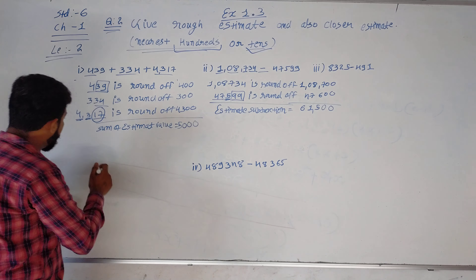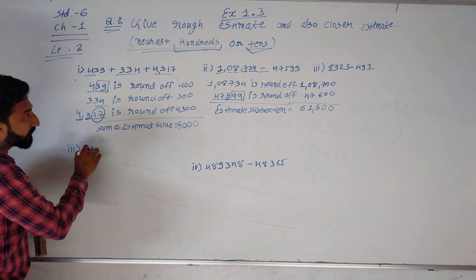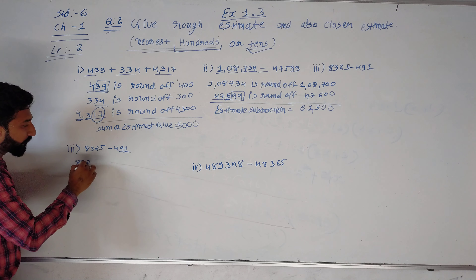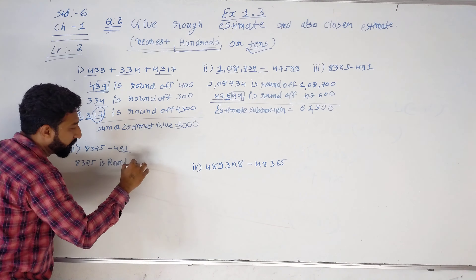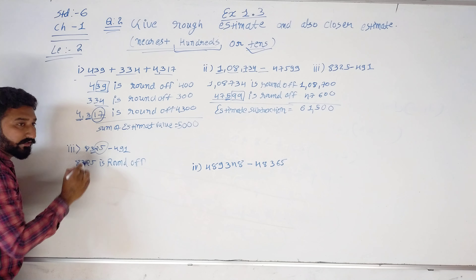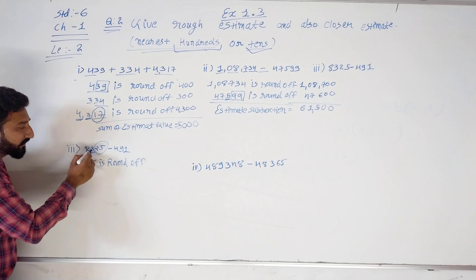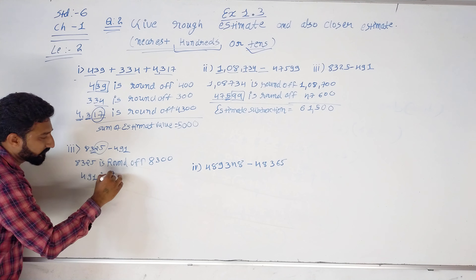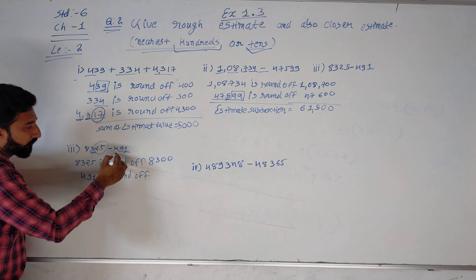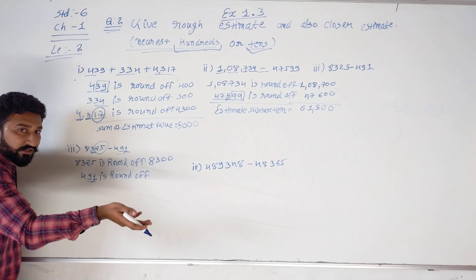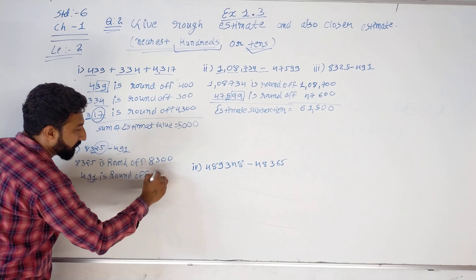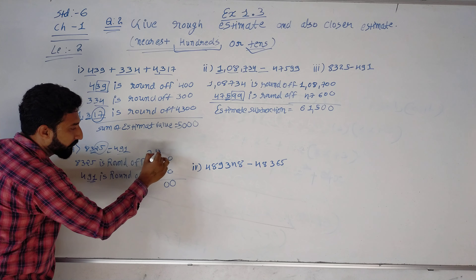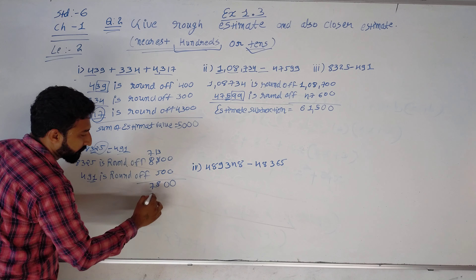Last one for subtraction: 8325 is round of — here 300, and after 3 the digit is 25. 25 is nearest to the previous round of value, so it becomes 8300. Then 491 is round of — 91 is nearest to the next round of value, so it becomes 500. Subtraction: borrowing gives us 7800.